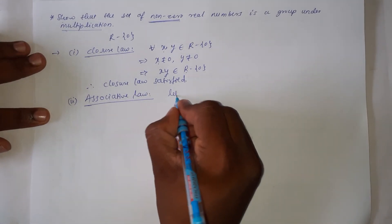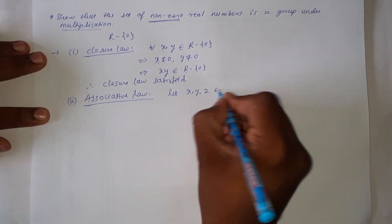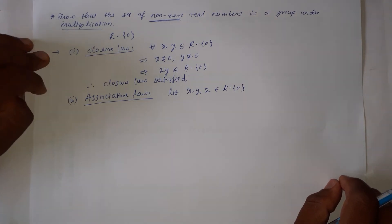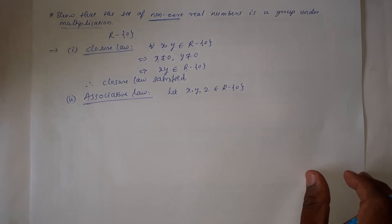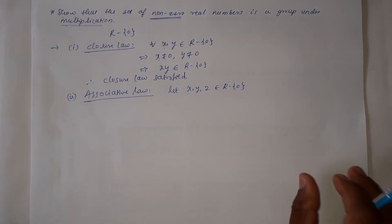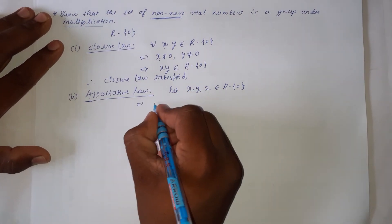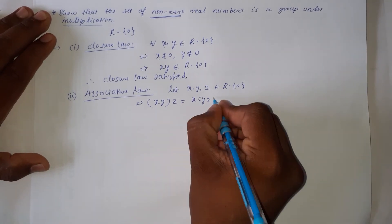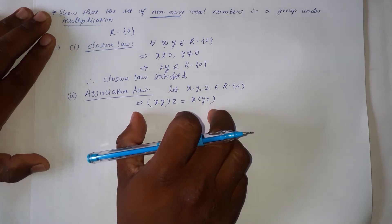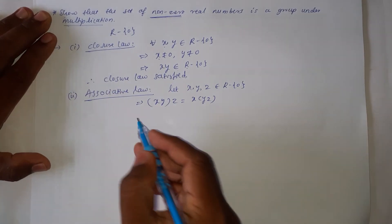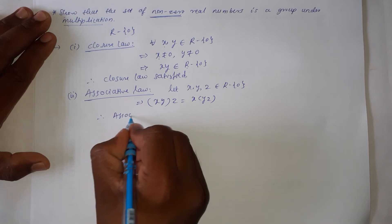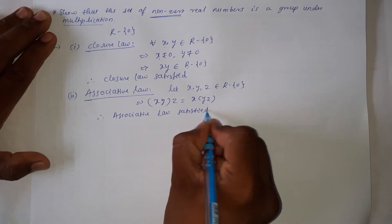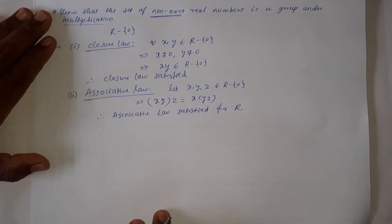Second law: associative law. Let x, y, z be three nonzero real numbers. The binary operation is multiplication, and we know that multiplication follows the associative property. Therefore, (x·y)·z = x·(y·z). Hence, associative law is satisfied for the set R minus {0}.